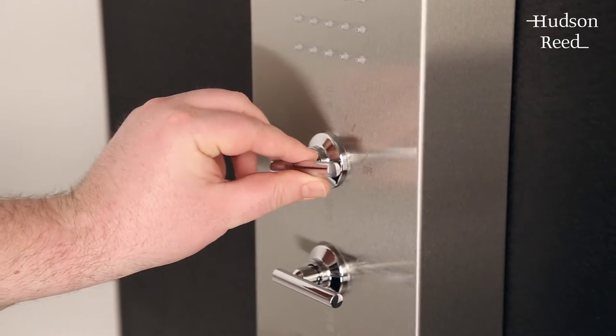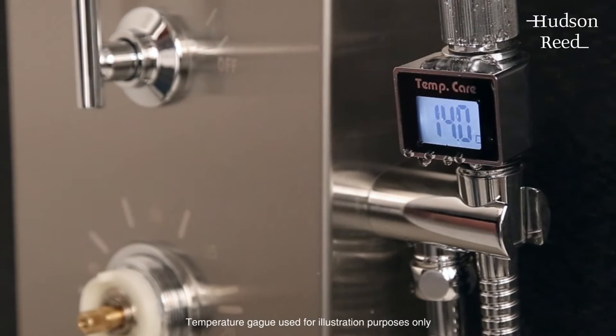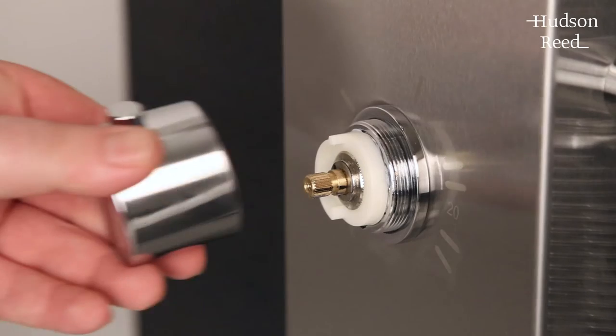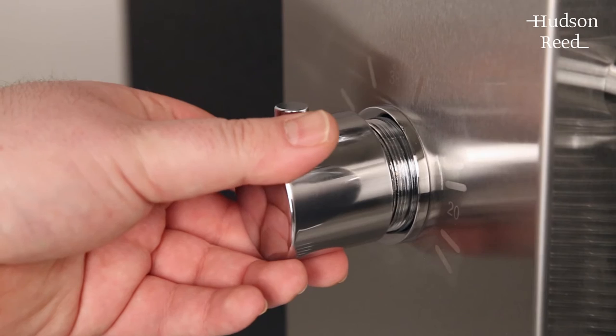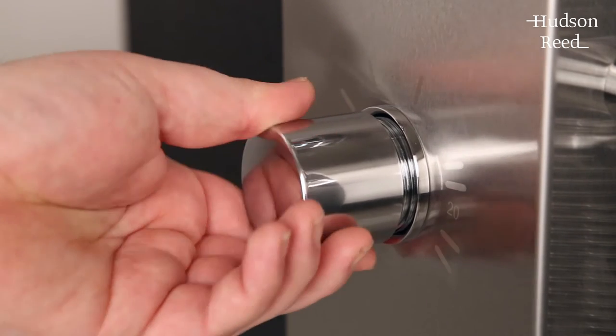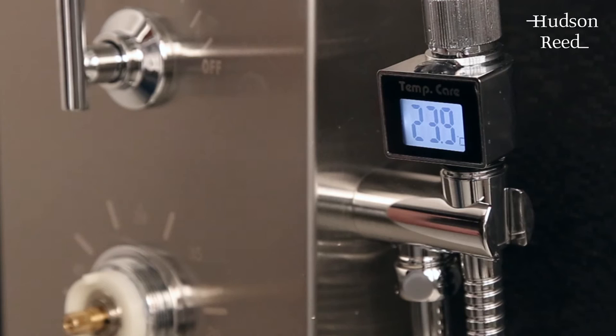Turn on the shower and allow it to reach its current maximum temperature. To raise the maximum temperature, gently place the control handle loosely onto the spindle and turn anti-clockwise one quarter of a turn.